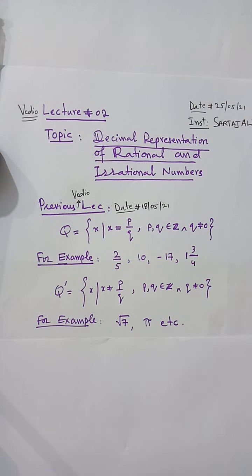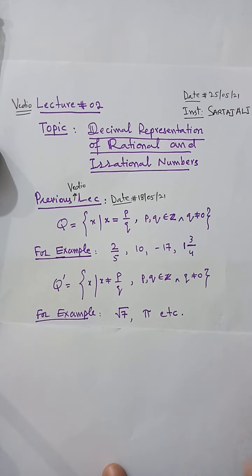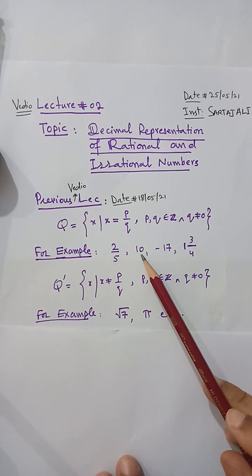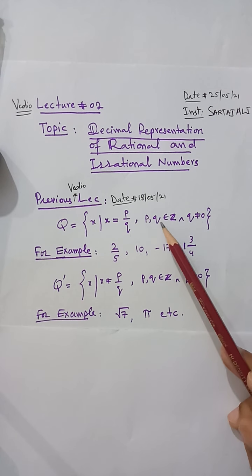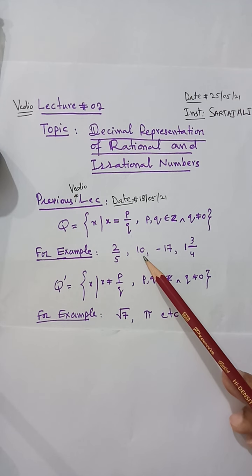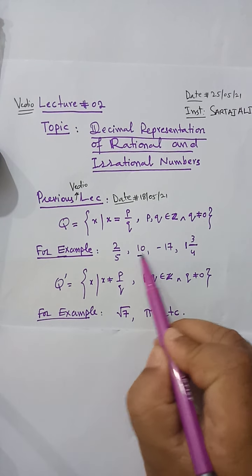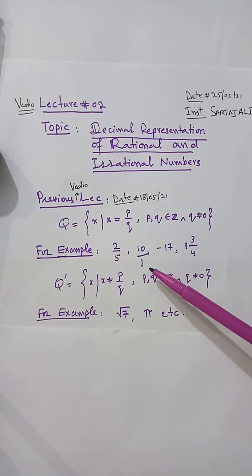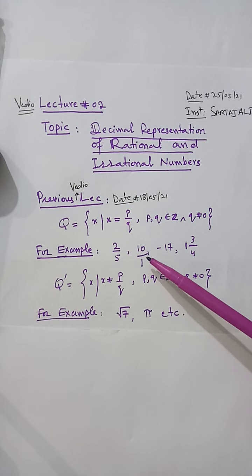We discussed a result that all natural numbers, whole numbers, and integers are proper subsets of rational numbers. So 10 is a rational number — it can be written as 10/1. The word 'rational' actually comes from 'ratio', so 10/1 is a ratio form. Here p is 10 and q is 1.